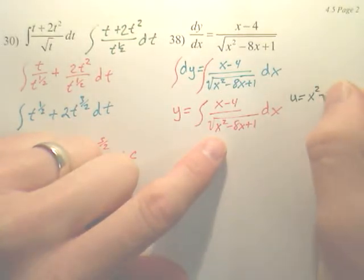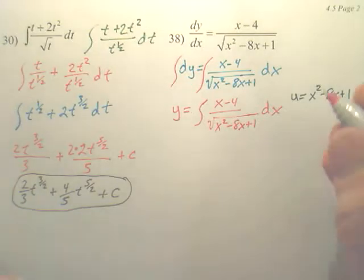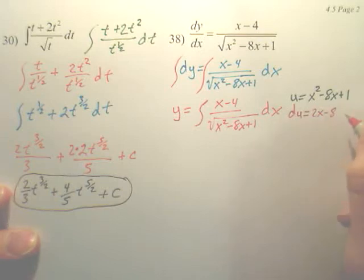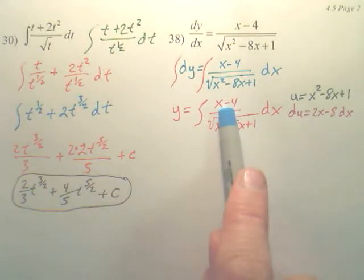Now, if u is this, if you derive that, you will get du equals 2x minus 8 dx. Remember, you want to make a differential out of it. Now, does this 2x minus 8 match x minus 4? No, but watch this.